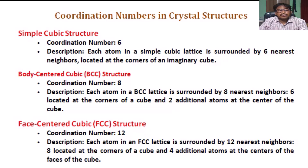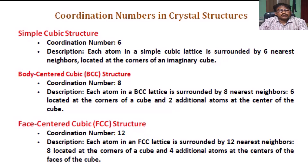Body Centered Cubic (BCC) Structure, Coordination Number 8. Each atom in a BCC lattice is surrounded by eight nearest neighbors: six located at the corners of a cube and two additional atoms at the center of the cube.